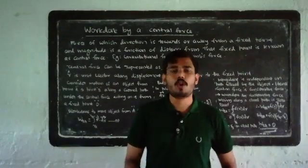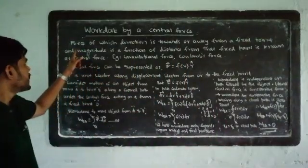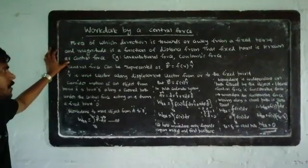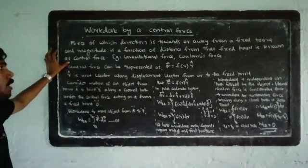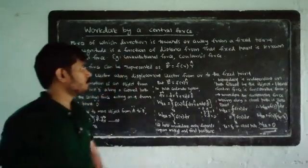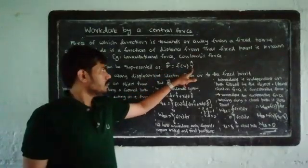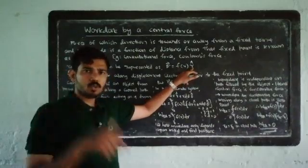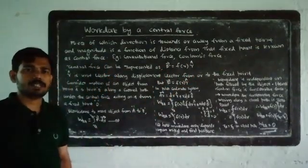In a central force field, one object experiences the central force. The force whose direction is towards or away from a fixed point, and whose magnitude is a function of distance from that fixed point, is known as a central force. Generally, a central force is represented as vector F equal to f(r) r-cap, where r-cap is the unit vector along the displacement vector from or to the fixed point.